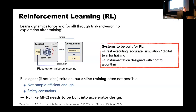It turns out that reinforcement learning is not as widely used in the accelerator community as one might expect. There are several reasons: online training is very often not possible because the algorithms are not sample-efficient enough, and because trial-and-error conflicts with safety constraints that are difficult to encode into the algorithms. More seriously, RL and model predictive control need to be built into the accelerator design — the accelerators would have to be built for RL.